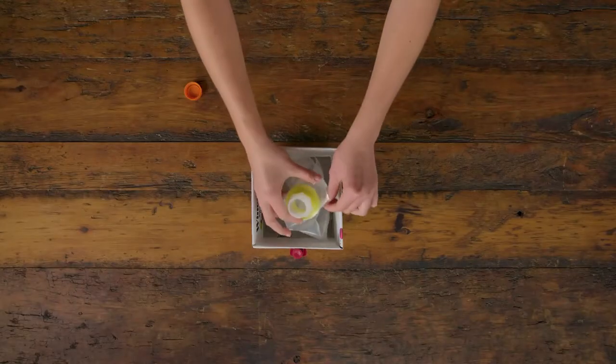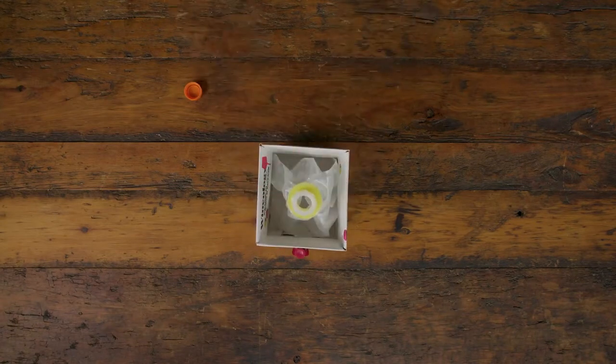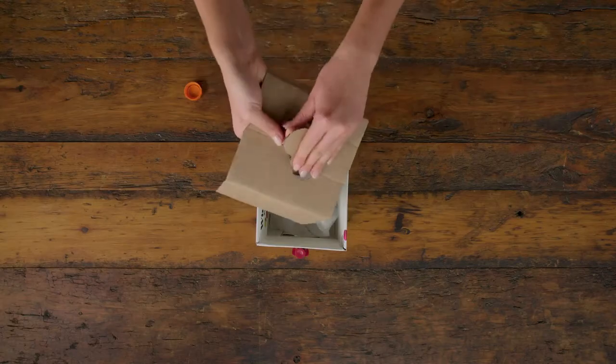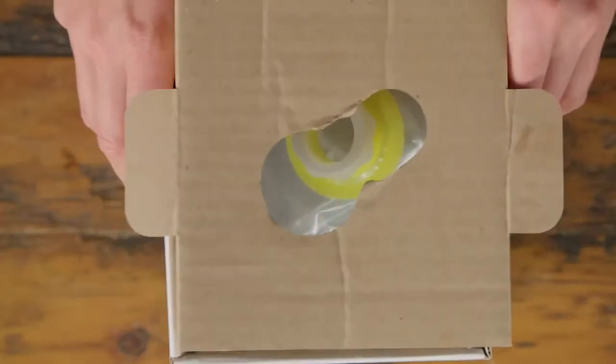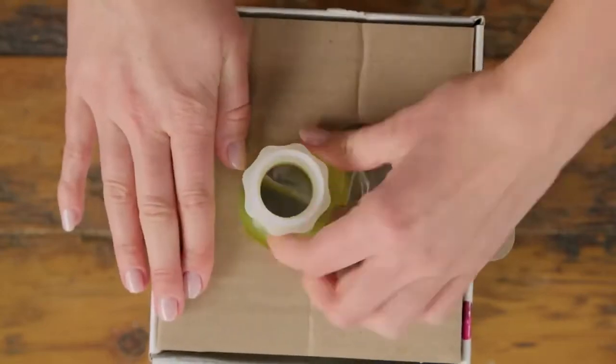Pull the bag apart to make room for the water and juice blend. Fold the flaps down on your cardboard insert and push the insert into the box. Make sure the spout is pulled through and locked into place.